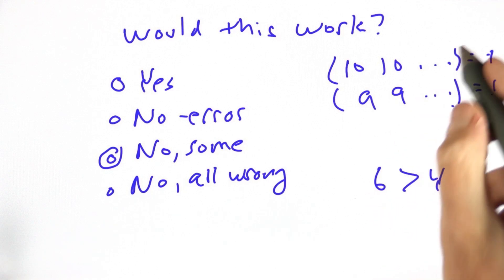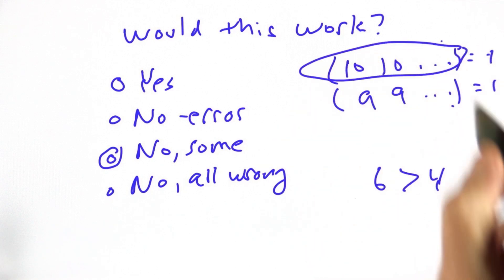But we know that we want the pair of tens to outrank the pair of nines. So, we've got to come up with some way to make that comparison so that we're able to distinguish between two